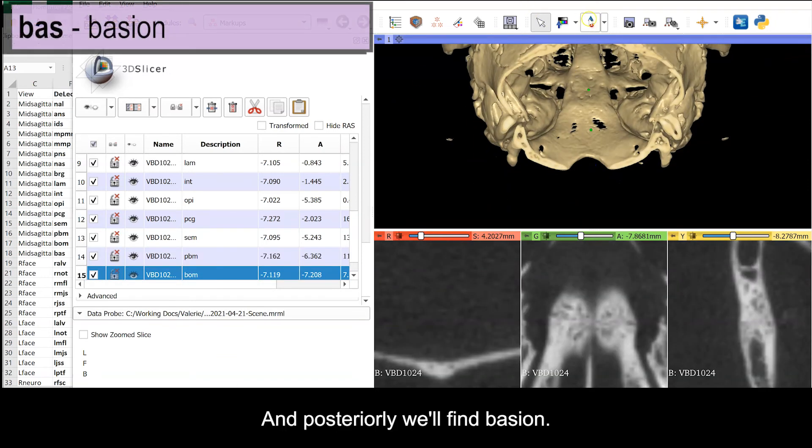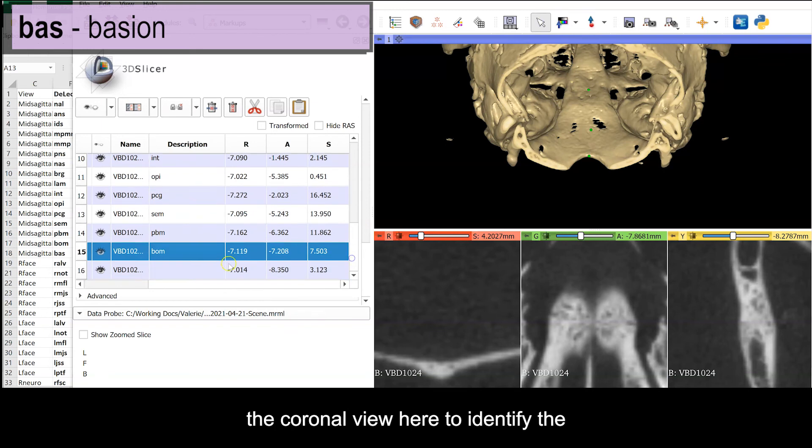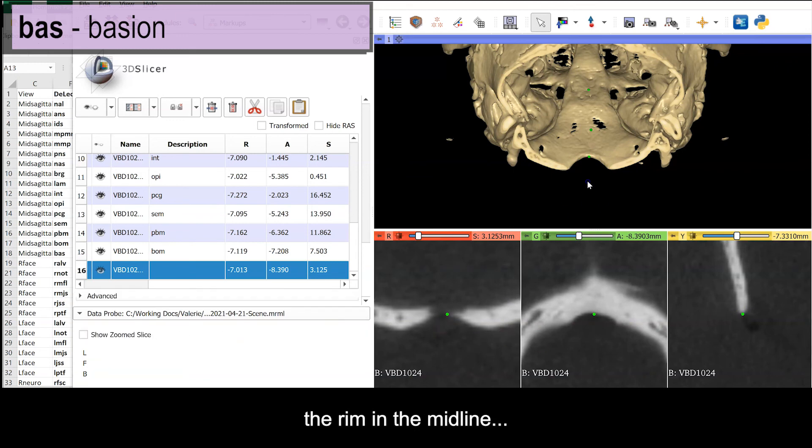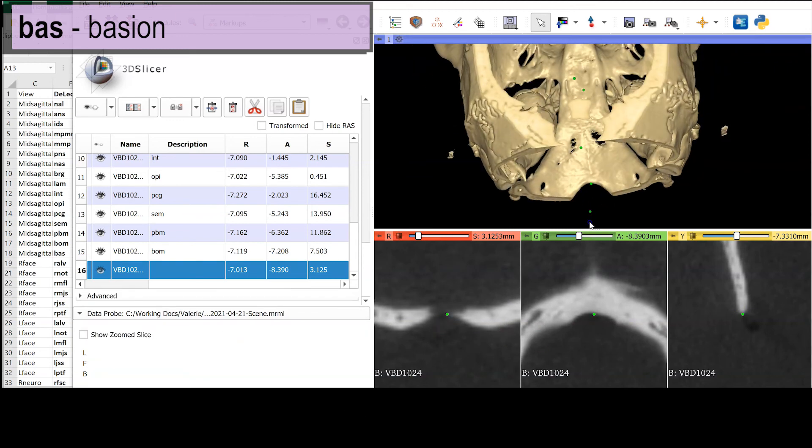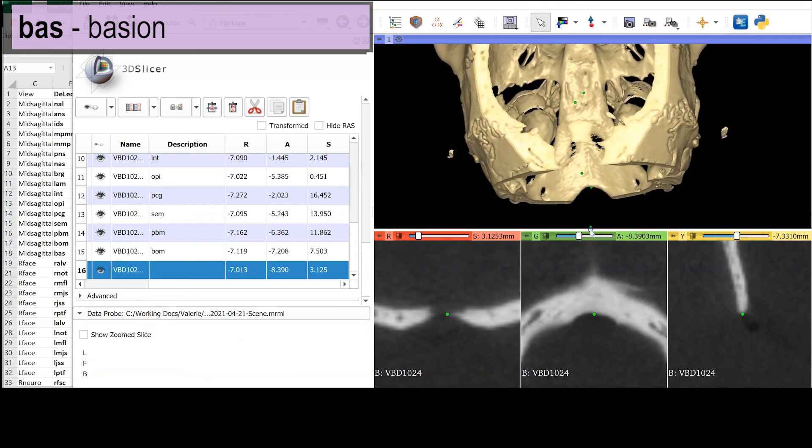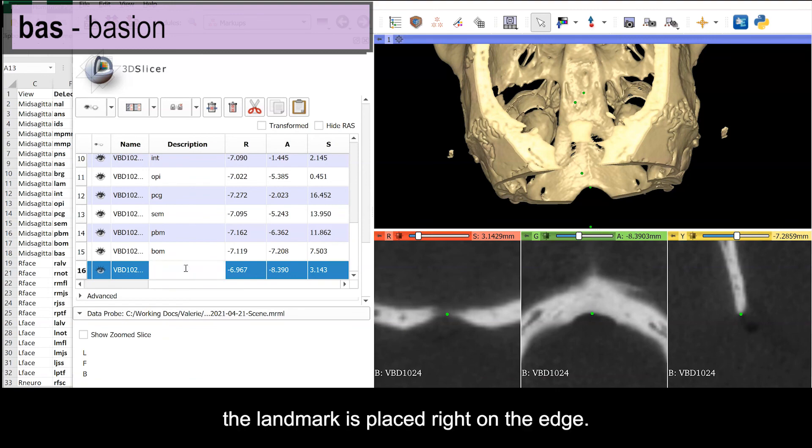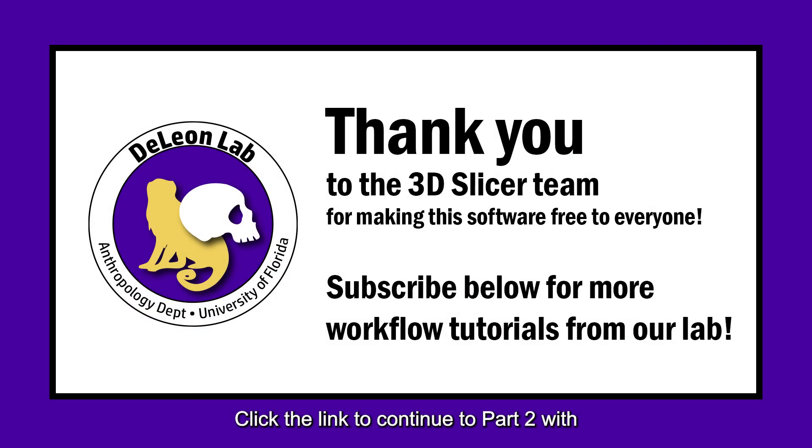And posteriorly, we'll find Bayesian. Again, use the radiolucent gap in the coronal view here to identify the most anterior point of foramen magnum and place the landmark on the rim in the midline using the sagittal view to confirm that the landmark is placed right on the edge.